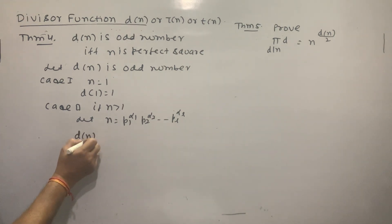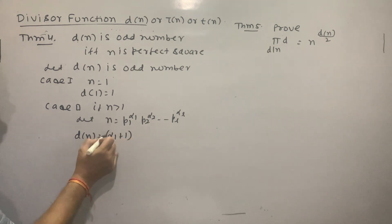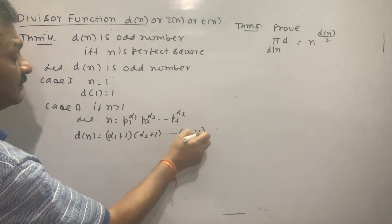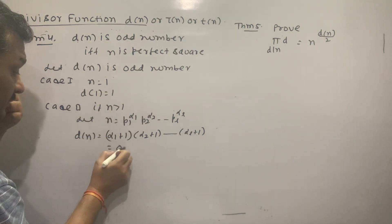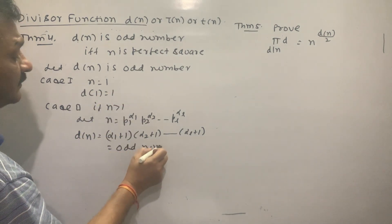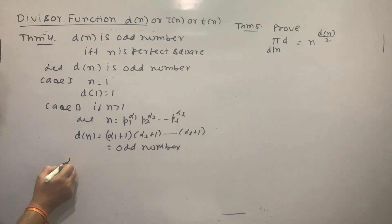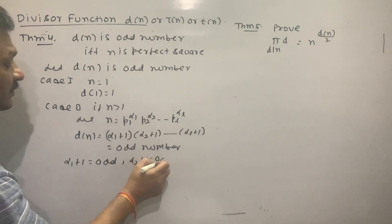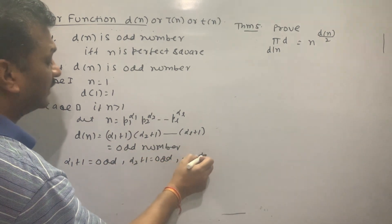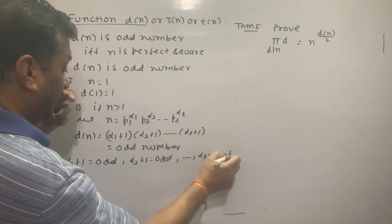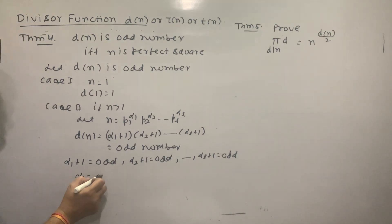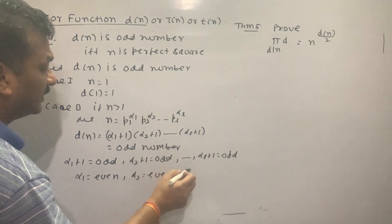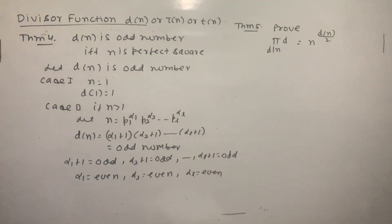So d(n): by Theorem 1, d(n) equals (α₁ + 1)(α₂ + 1)·...·(αᵣ + 1).